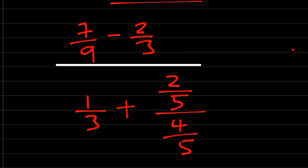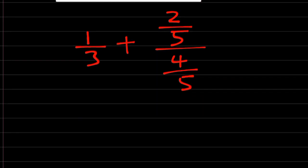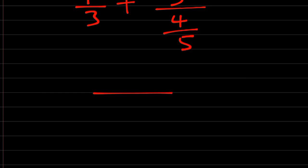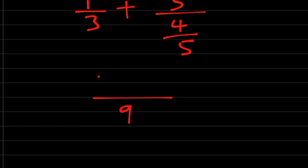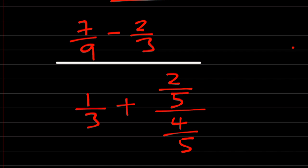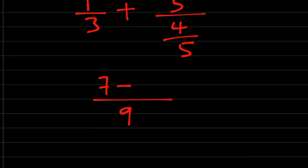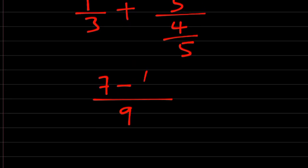This is the expression given: 7/9 minus 2/3. The LCM of 9 and 3 is 9. 9 goes into 9 once, 1 times 7 is 7. Minus: 3 goes into 9 three times, 3 times 2 is 6.